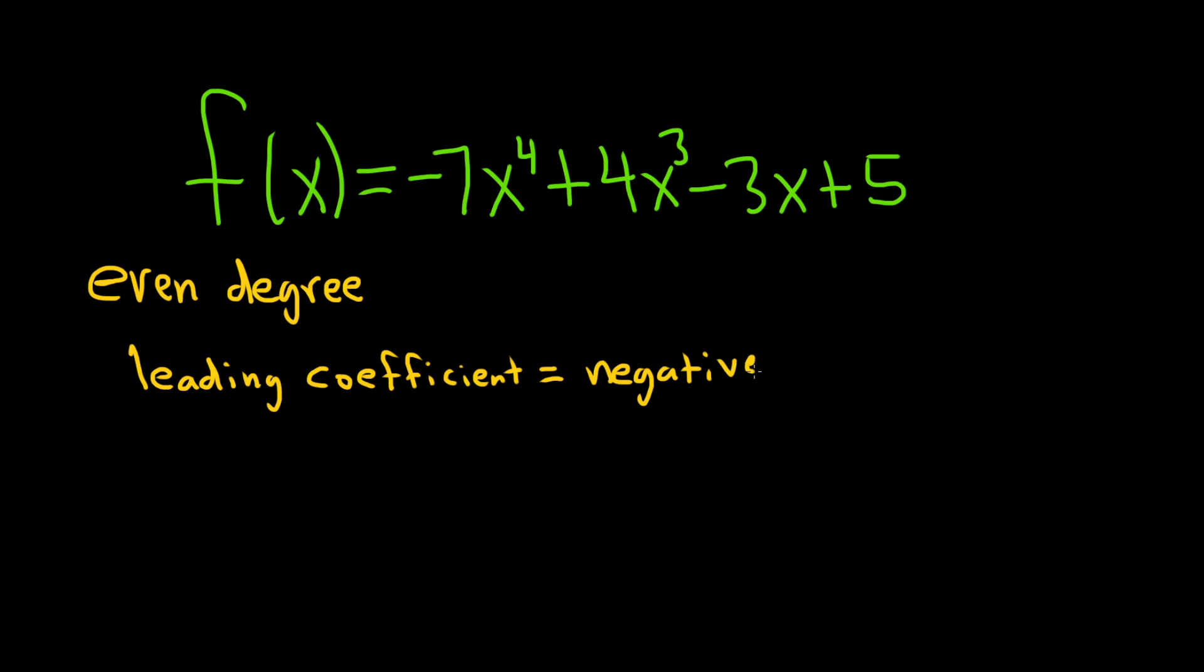So there's something called the end behavior test. What I like to do is think about a simple function. What is the easiest function in the world that you know that has even degree and a negative leading coefficient? Well, I think that function might be negative x squared.